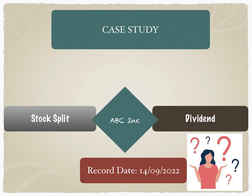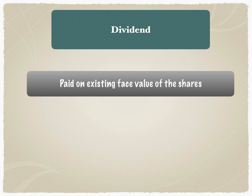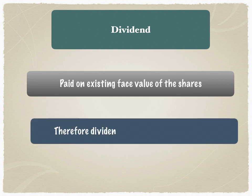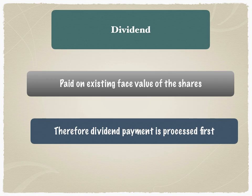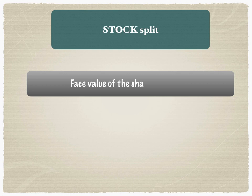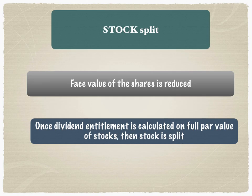The corporate actions executive then asks: what is the method of processing these mandatory corporate actions? Should we process the stock split first or the dividend first? This was part of a LinkedIn post I put up, and very senior executives working with hedge funds answered in a simple manner: the dividend is paid on the existing face value of the share, therefore dividend payment is processed first. After the dividend is paid out to existing shareholders, only then is the stock split, because the face value of the shares is reduced once the dividend entitlement is calculated on the full face value of the stock.